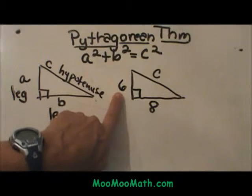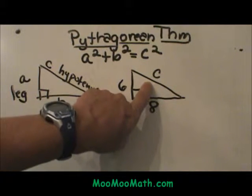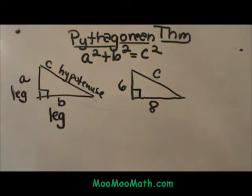Here is our example. If we have the legs of 6 and 8, what is C or the hypotenuse? We are going to work that out in just a second.